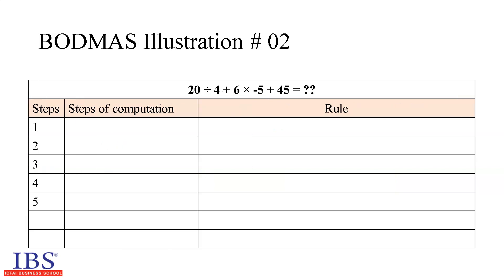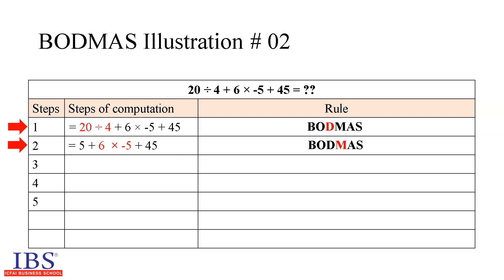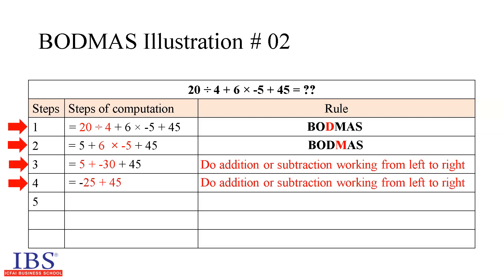In illustration 2, the expression 20 ÷ 4 + 6 × (−5) + 45 is being computed. Step 1 first computes the division: 20 ÷ 4. Step 2 computes the multiplication: 6 × (−5). Step 3 computes the addition: 5 + (−30). Step 4 computes the addition: −25 + 45. Step 5 gives the result. The applicable BODMAS rule for each step is shown in red in the associated rule column.